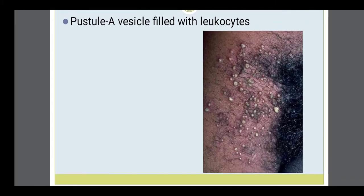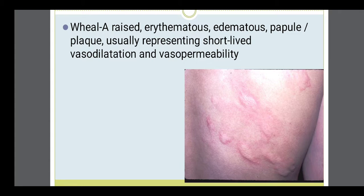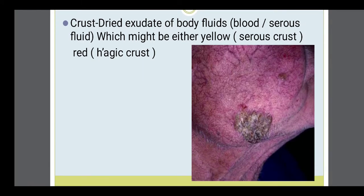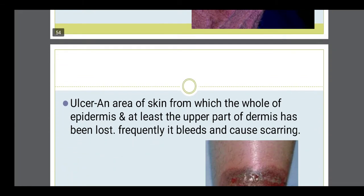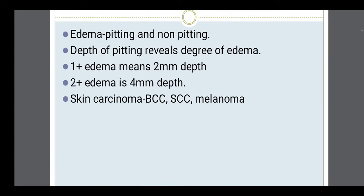When vesicles are filled with pus, these are pustules. Wheals — wheals are like mosquito bites; large wheals are also there and are generally due to allergies. Then crust — dried exudate of body fluids like blood or serous fluid, which might be either yellow or red crust. Ulcer is an area of skin from which the whole epidermis and at least the upper part of the dermis has been lost; normally an ulcer always bleeds and will cause scarring. Then examine for edema — whether it is pitting edema or non-pitting edema.